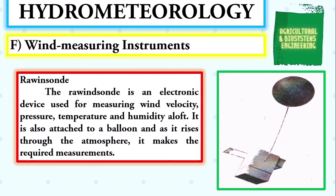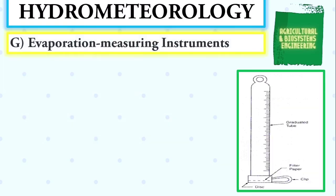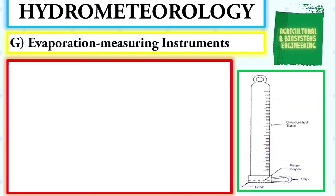Next, the rawinsonde — an electronic device used for measuring wind velocity, pressure, temperature, and humidity aloft. It is also attached to a balloon, and as it rises through the atmosphere it makes the required measurements.